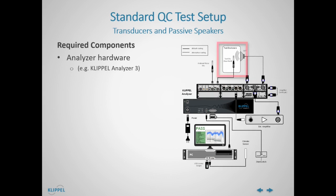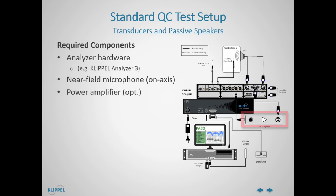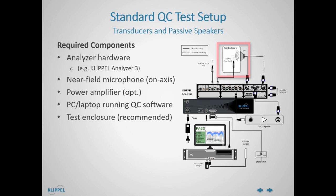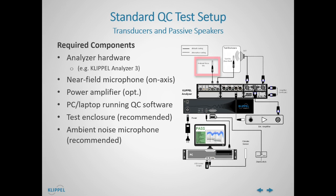We need at least one test microphone in the DUT's near field. An external power amplifier can be added in case the power or peak voltage provided by the internal amplifier of the analyzer is insufficient. A Windows PC with the Klipple QC software is connected to the analyzer. An optional test enclosure is highly recommended for ambient noise attenuation and defined test conditions. Additional robustness is obtained by adding an ambient noise microphone.